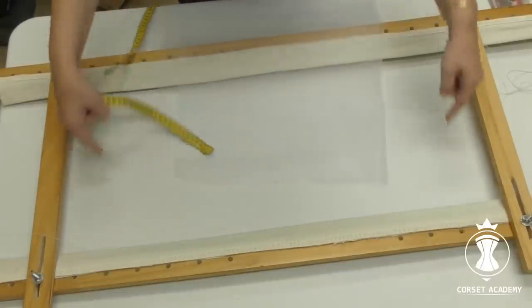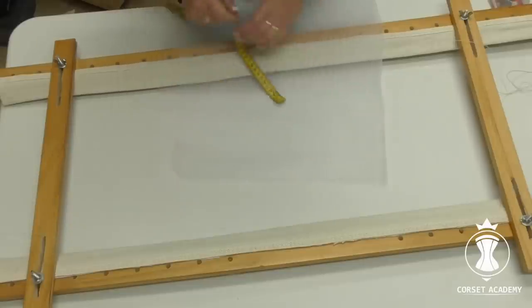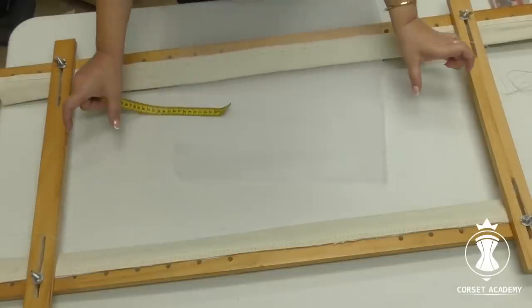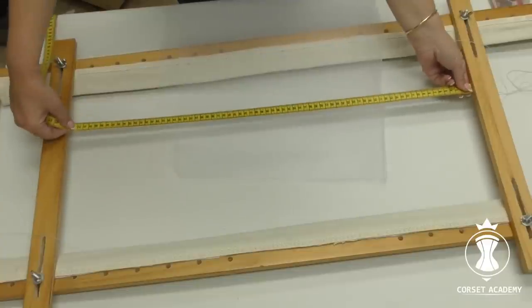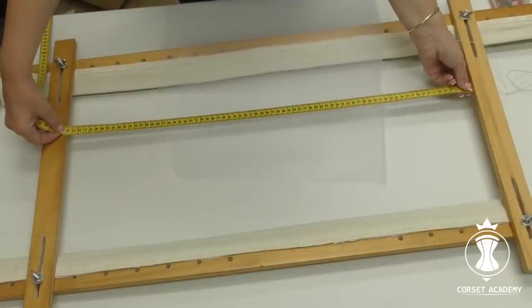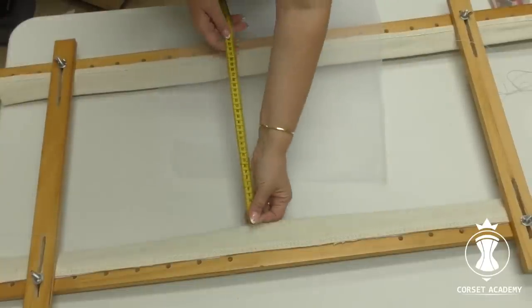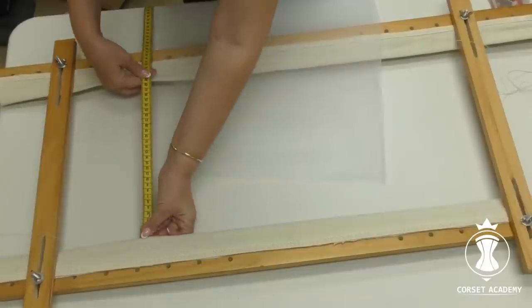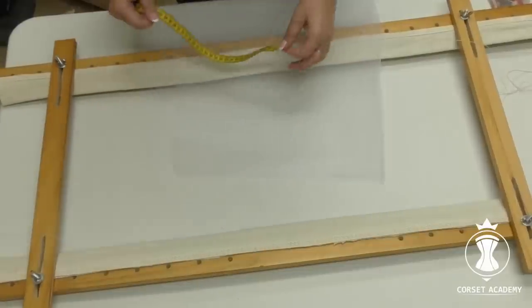I set the working area of the embroidery frame with some extra allowance. I have got the approximate sizes of the working area with allowances. Length, 74 cm and Height, Width, 30 cm.